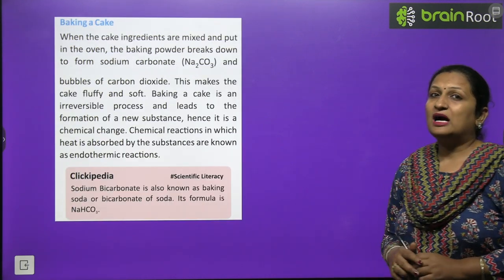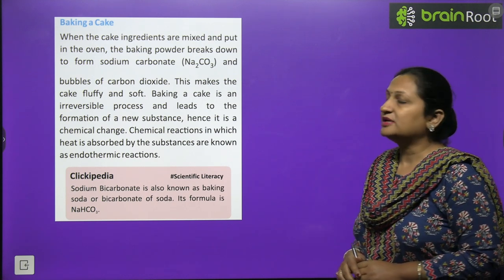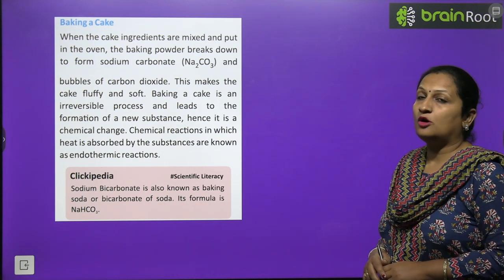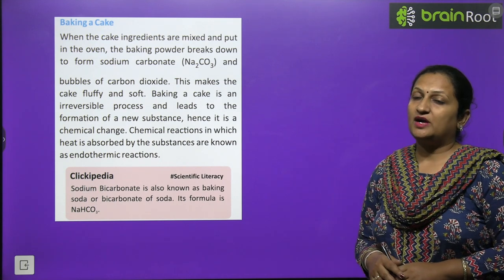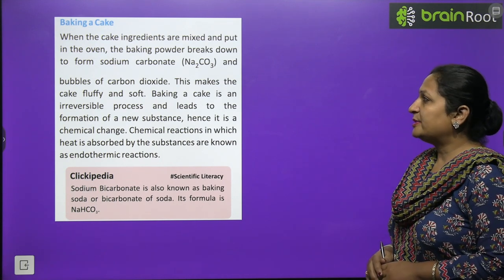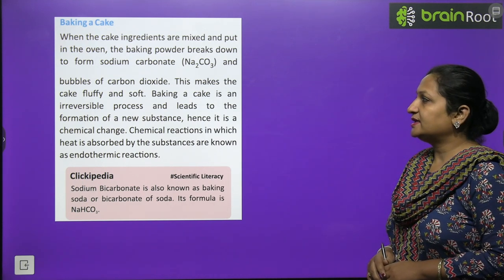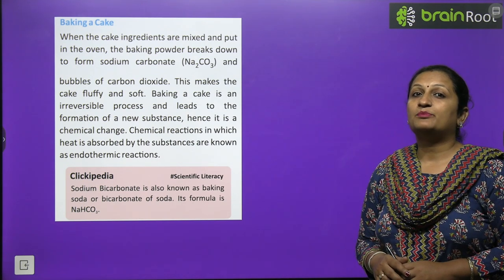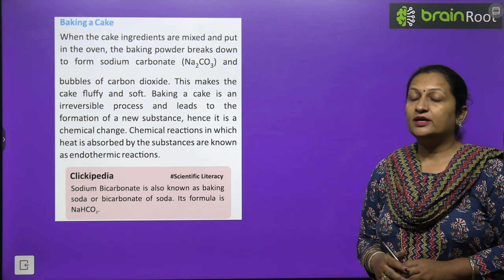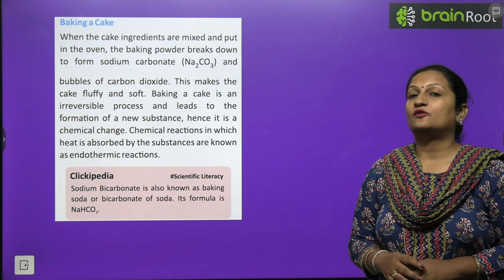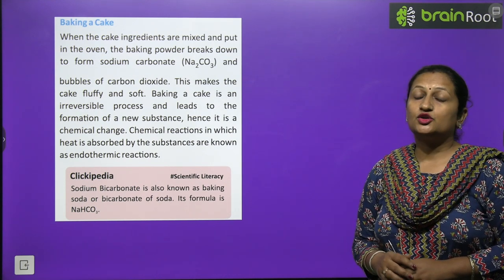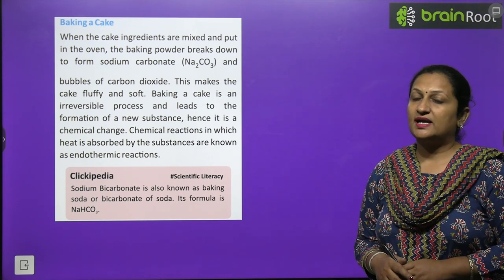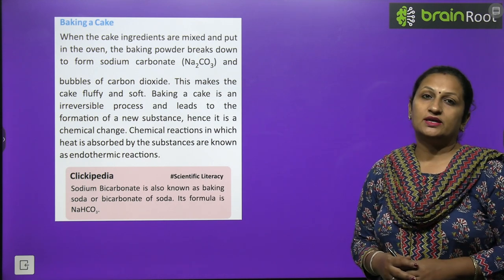Example: baking a cake. When you bake a cake, you use baking soda or baking powder. Baking soda (NaHCO3) breaks down to form sodium carbonate and bubbles of carbon dioxide, which makes the cake fluffy and soft. Baking a cake is an irreversible process - you cannot convert it back into refined flour or baking soda. Carbon dioxide gas is evolved, which is why the dough rises and becomes fluffy.